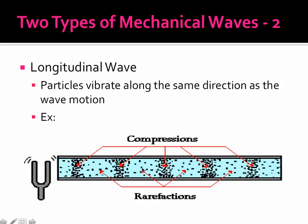You also still have wavelength, which is the length of one whole wave. So one compression to another, or one rarefaction to another. You can have amplitude. It's a change in the density. But we typically don't measure it in longitudinal waves.